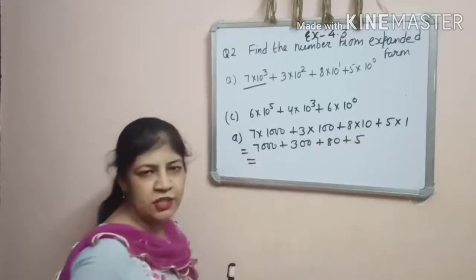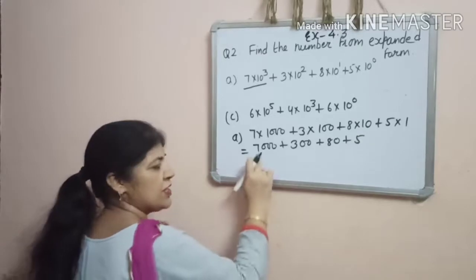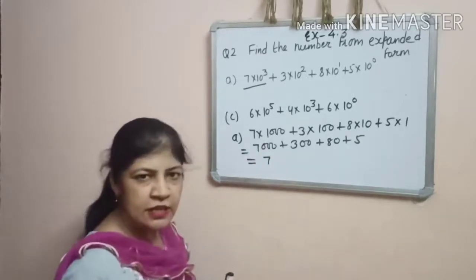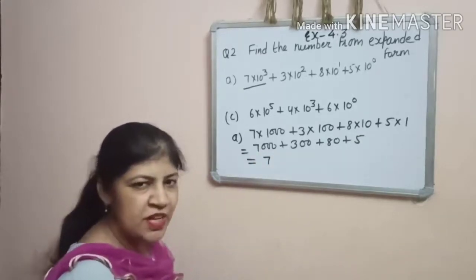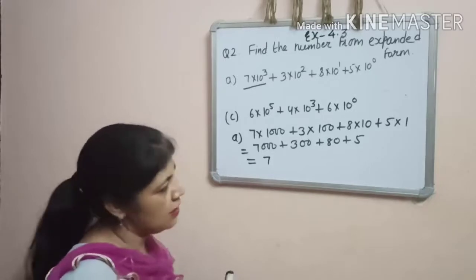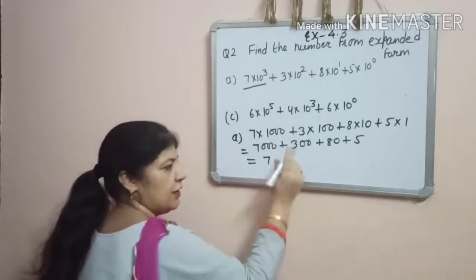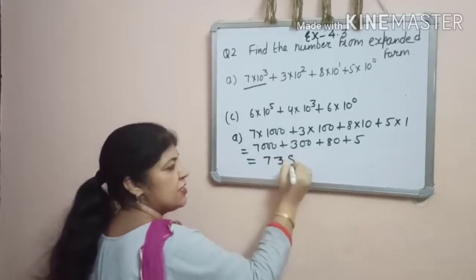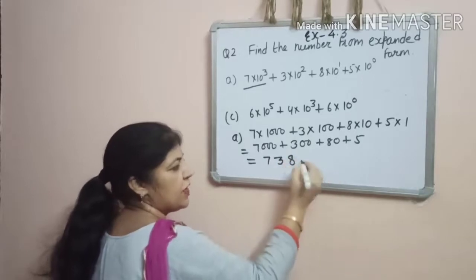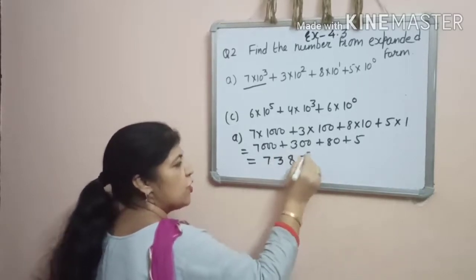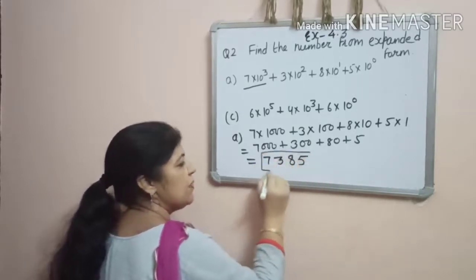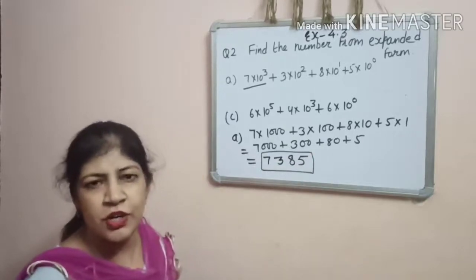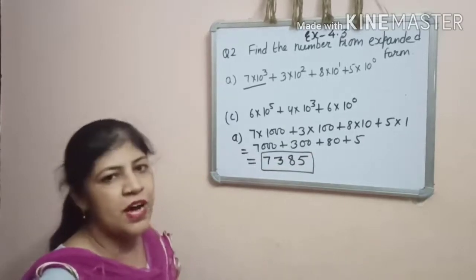Now you can write it in compact form. First digit is 7. After 1000, the previous place value is 100, that is 3. After that, tens, and after that, ones. So your answer will be 7,385.